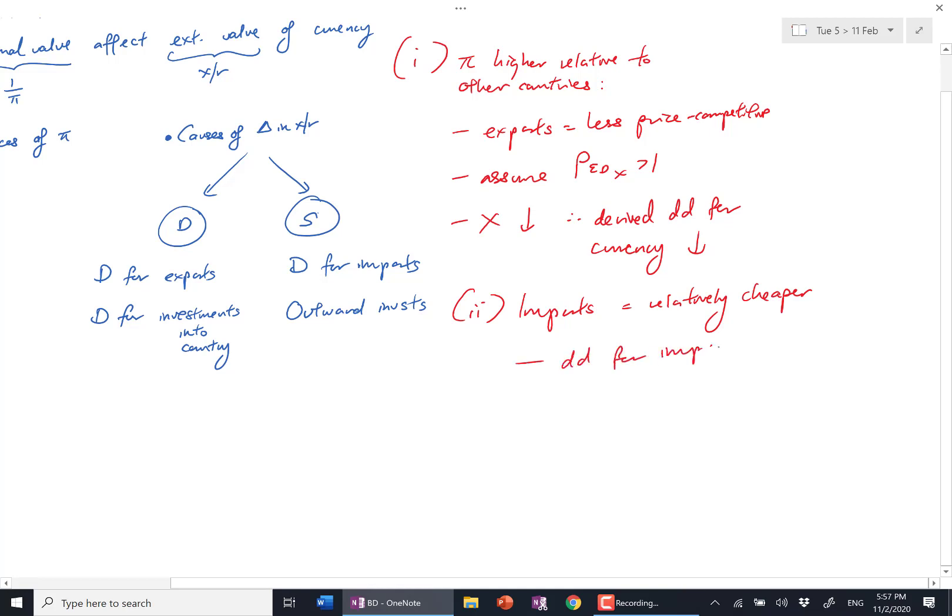So imports are relatively cheaper. As a result, demand for imports increase, so import expenditure goes up, supply of your currency goes up. I didn't put PDM because this is a change in demand. When there's a shift in demand, M will increase. It's not a change in quantity demand.